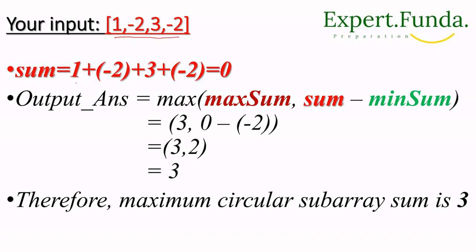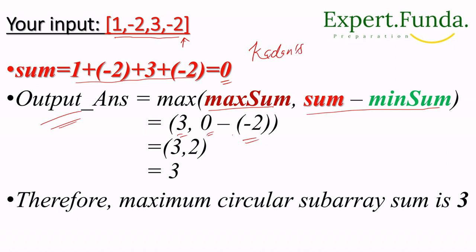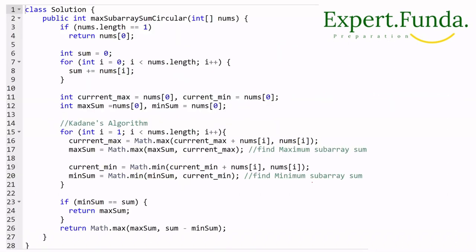Total sum of the array is 0. Now how do we calculate the final answer? We have max_sum = 3 and total_sum = 0. The circular maximum is total_sum - min_sum = 0 - (-2) = 2. We then take max(max_sum, total_sum - min_sum) = max(3, 2) = 3. So the maximum circular subarray sum is 3.